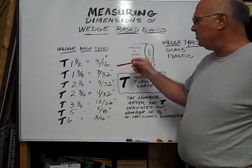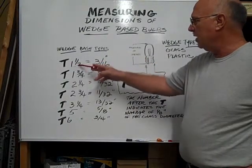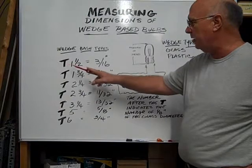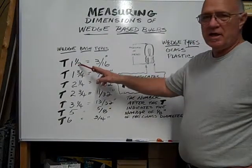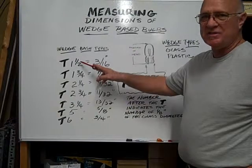The smallest size usually is a T one and a half. The T is tubular shaped. The one and a half denotes the dimension in eighths of an inch.